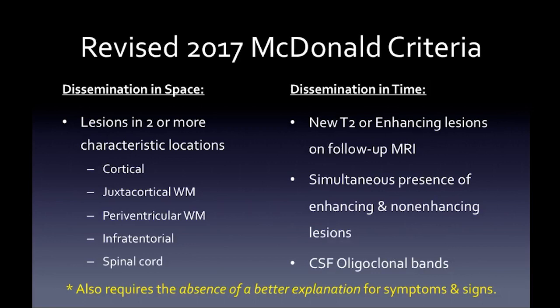For MRI, there are the revised 2017 McDonald criteria. You look for dissemination in space and time. In space, you need lesions in two or more characteristic locations: cortical — new for the 2017 criteria — juxtacortical white matter, periventricular white matter, infratentorial white matter (brainstem or cerebellum), or spinal cord. Dissemination in time requires a new T2 lesion or enhancing lesion on follow-up MRI, or simultaneous enhancing and non-enhancing lesions. CSF oligoclonal bands were also newly added, and there must be an absence of a better explanation.